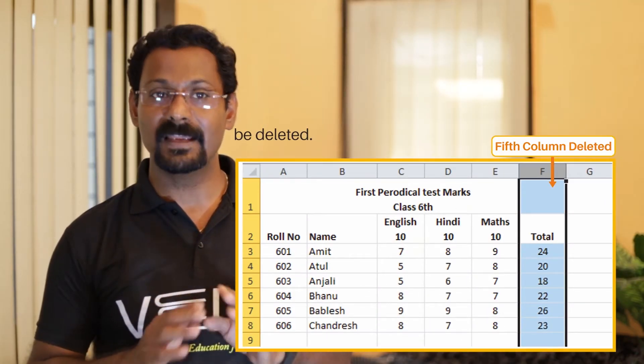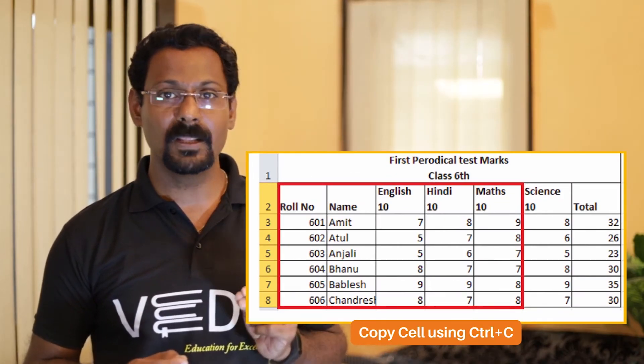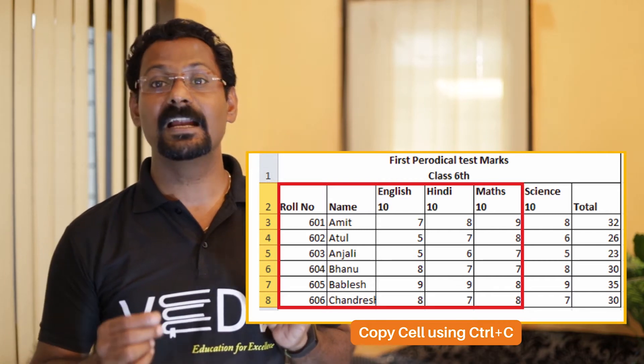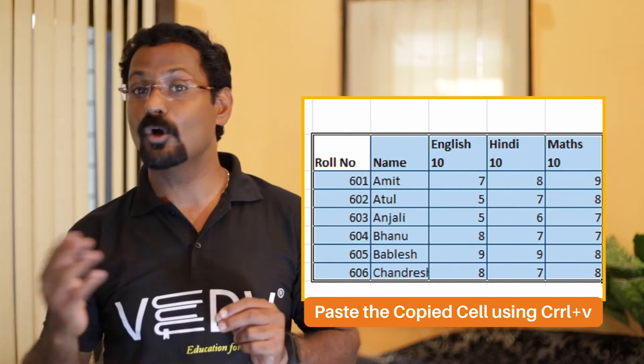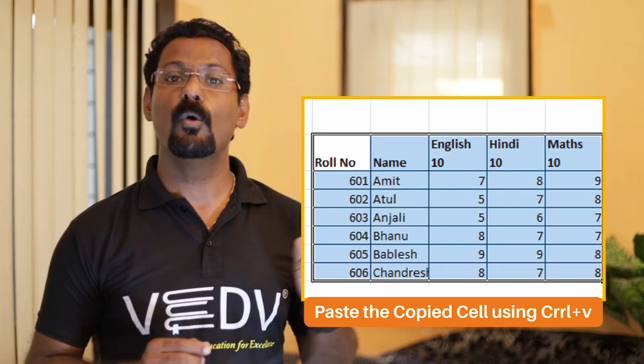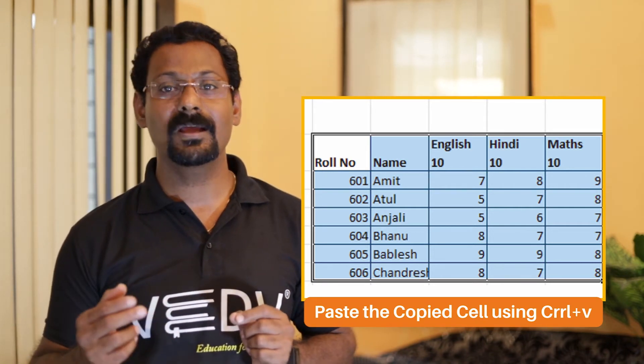Copy and paste: to keep multiple copies of data, MS Excel provides copy and paste options. To copy and paste, follow these steps. Number one: select the cell, row, or column you want to copy. Number two: in the Clipboard group on the Home tab, click on Copy or press Ctrl+C. Number three: select the cell where you need to paste the copied content. In the Clipboard group on the Home tab, click on Paste or press Ctrl+V.